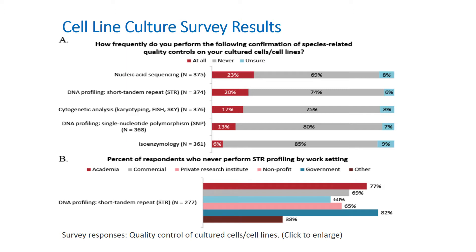The financial implications of misidentified or contaminated cell lines can be profound — as much as $700 million per year in research could be at risk. A survey conducted by GBSI shows that the majority, 52%, of respondents never perform authentication or other species-related QC tests on cell lines used in their experiments. Moreover, 74% never conduct STR profiling.